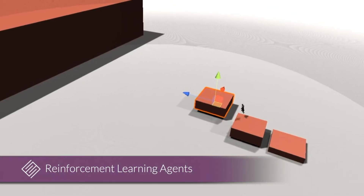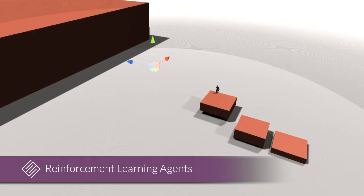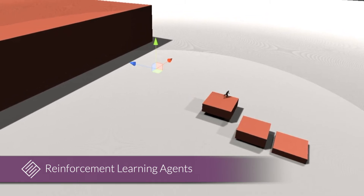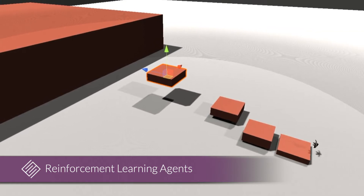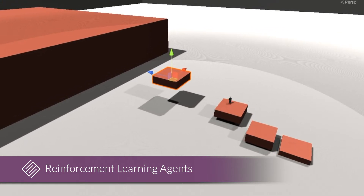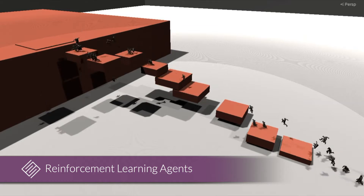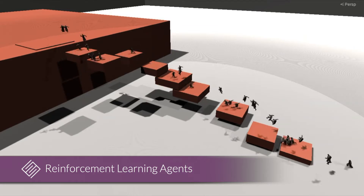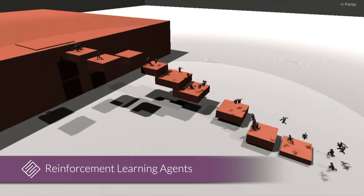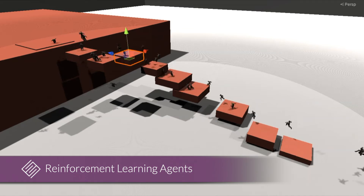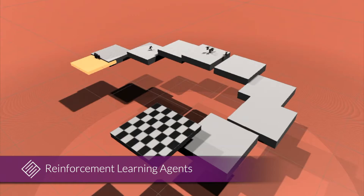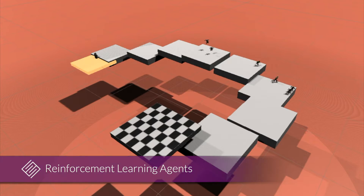Previous work in automated gameplay testing shows how reinforcement learning agents could potentially be used for real-time game validation. However, reinforcement learning suffers from two major drawbacks. First, is a low level of controllability, as the agents tend to play at near-optimal levels and without regard to the designer's intent for the game. Second, reinforcement learning is sample inefficient, meaning that the learning model typically requires enormous training time.